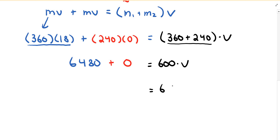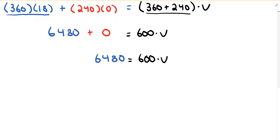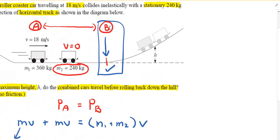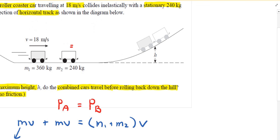Isolating for speed by dividing both sides by 600: 6480 divided by 600 gives a speed of 10.8 meters per second at position B. Now let's relabel the diagram — position B is at the bottom where the collision occurs, and position C is at the maximum height. From B to C we'll use the work-energy theorem.